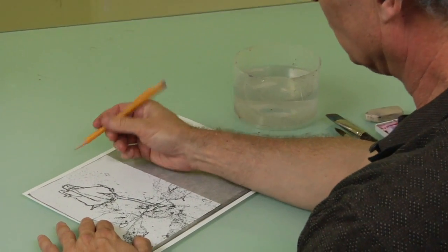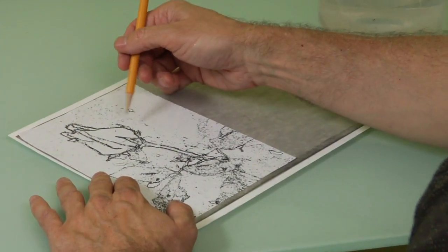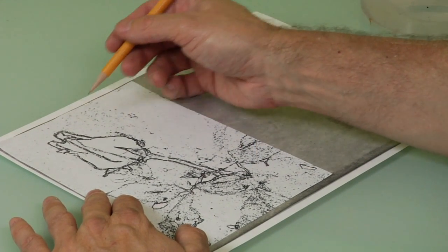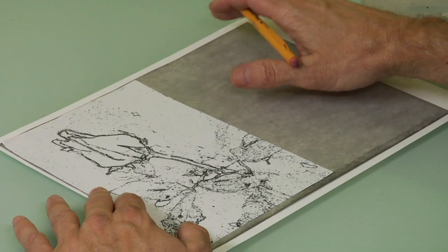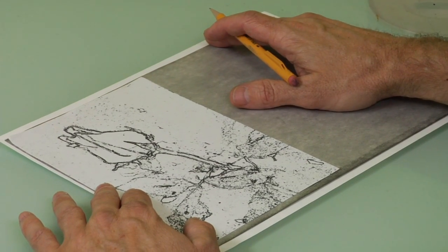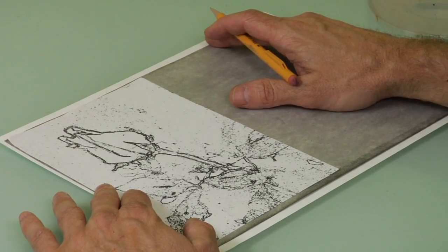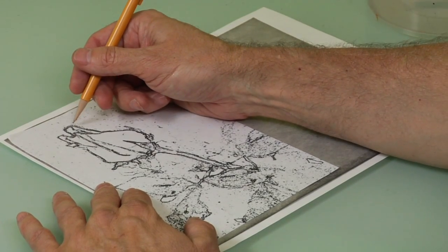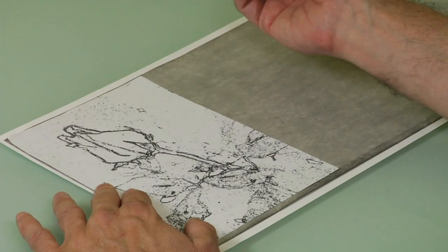We're going to use an outline of the shapes to trace, and we're using special transfer paper that you can get at any hobby store. It's erasable, so if you make a mistake, you can erase it.